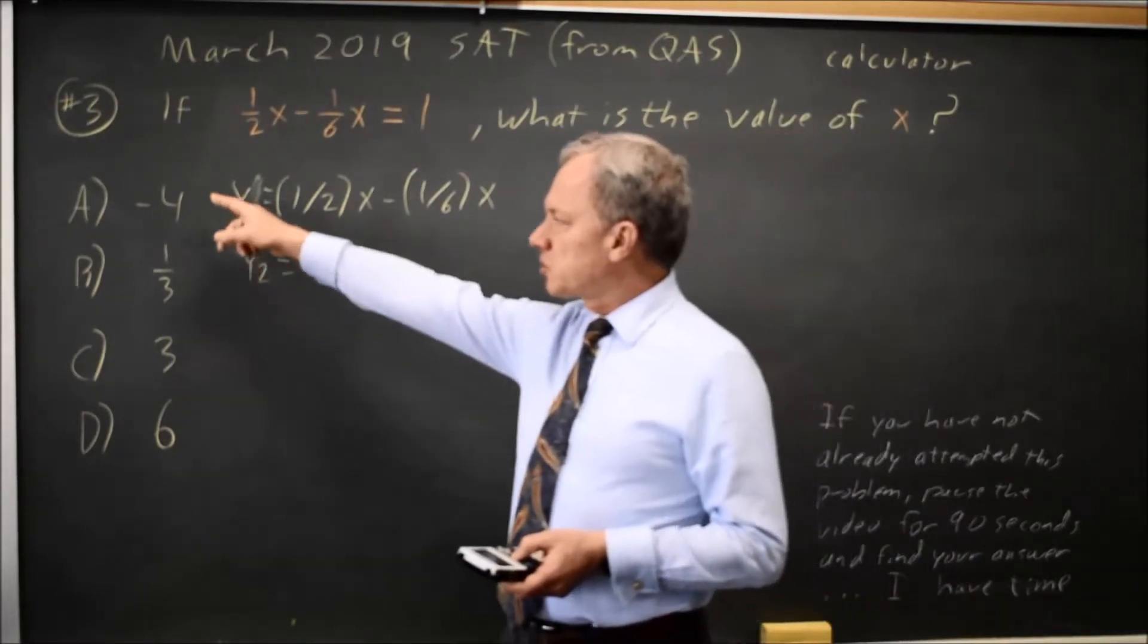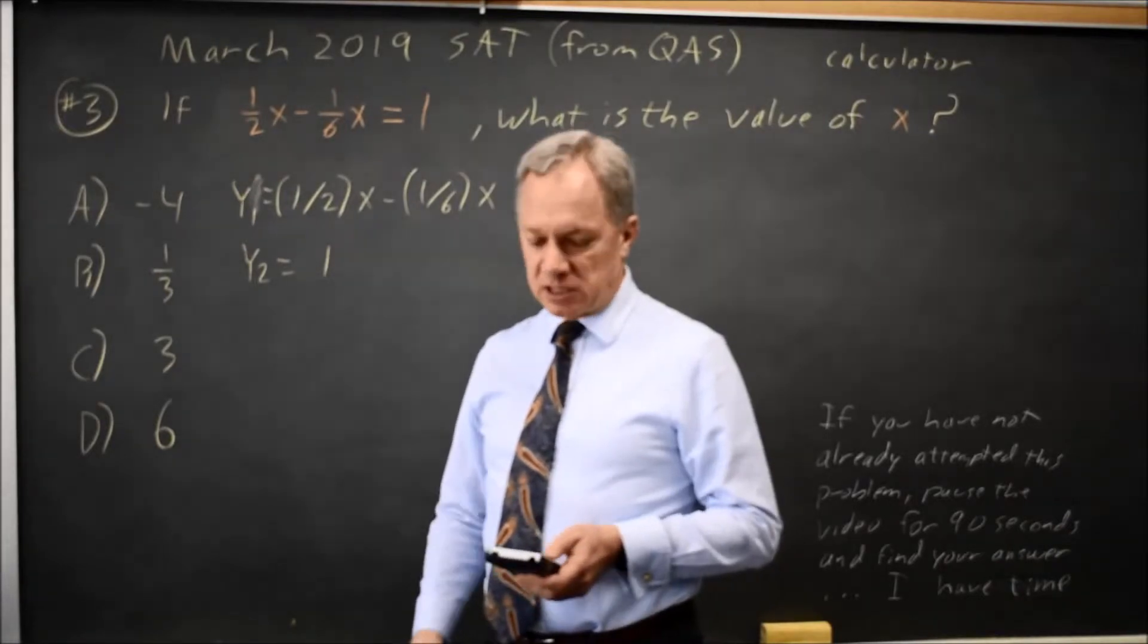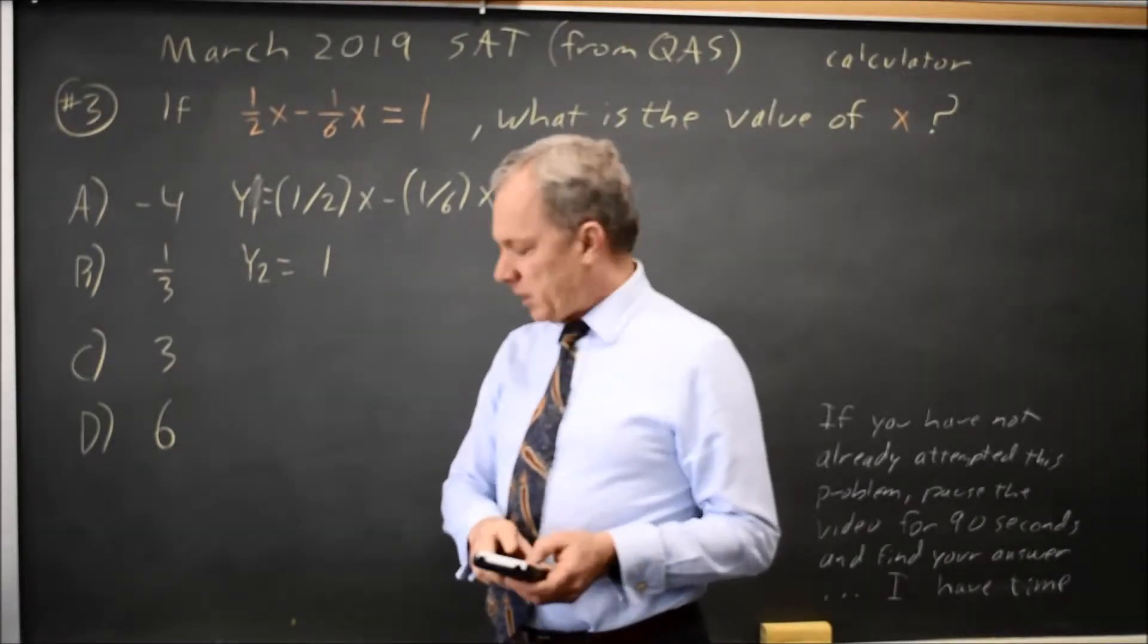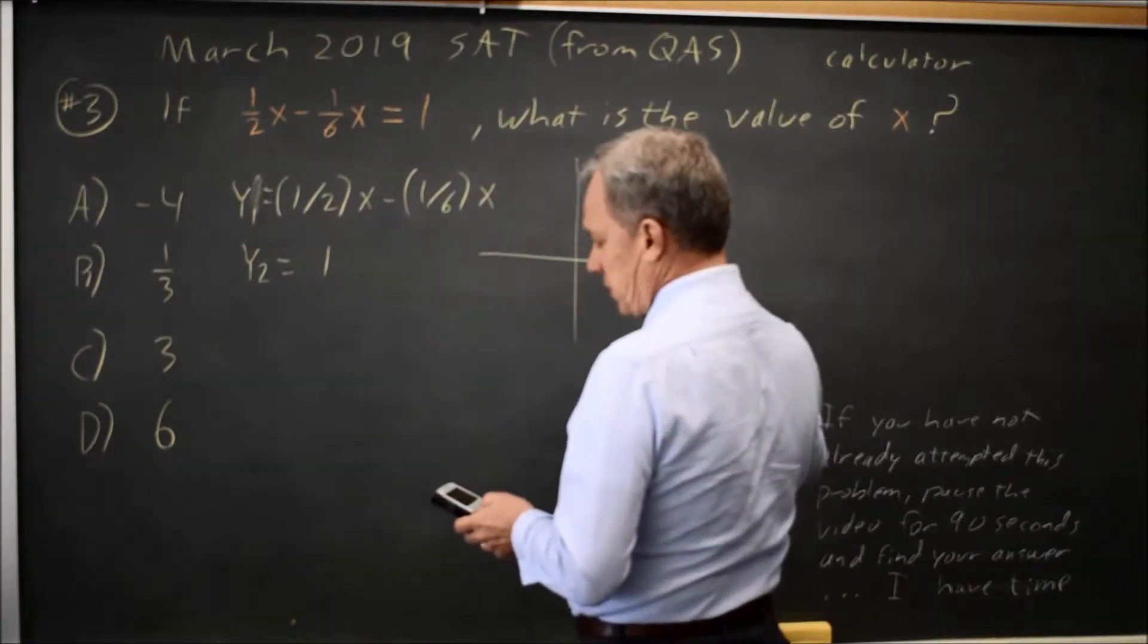Looking at the answer choices, the x value has to be between negative 4 and positive 6. So I use zoom 6 for the standard window. And the graph looks something like this.